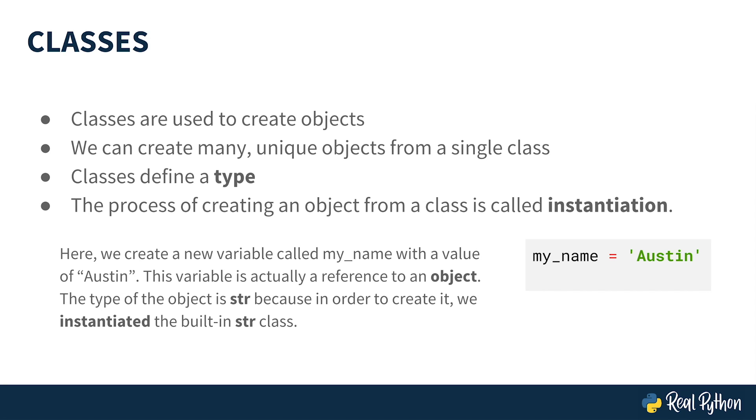Python defines a string as a class. And in order to create this object of type string, we instantiated the string class. To instantiate a class, or to create an instance of a class, just means to create an object from that class. You'll hear the word instantiation thrown around a lot in programming. So just remember, it means to take a class and create an object from that class.